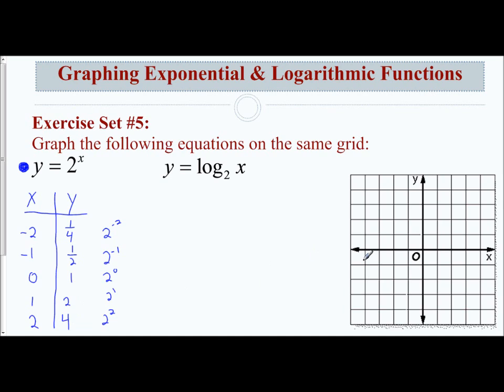I'm going to plot these. At negative 2, I'm at 1 fourth. At negative 1, I'm at 1 half. At 0, I'm at 1. At 1, I'm at 2. At 2, I'm at 4. Then I'm going to connect these with a curve, starting from the y-intercept and curving up, then curving down.